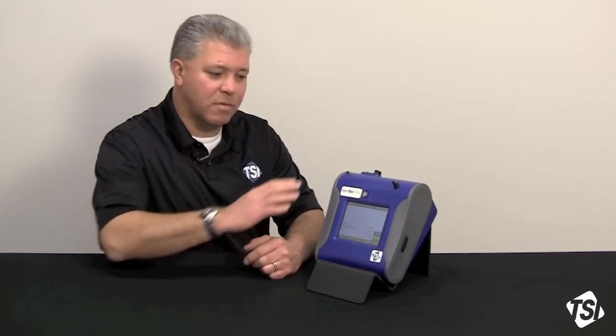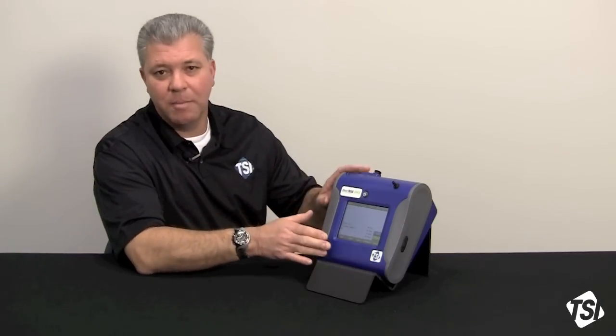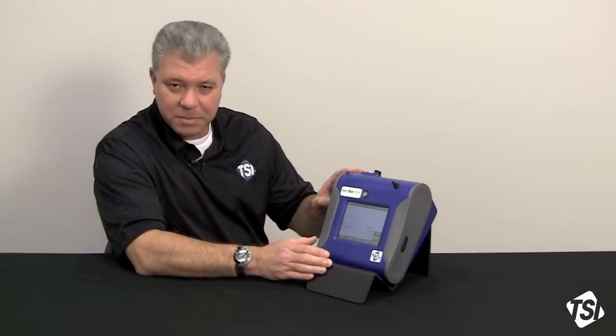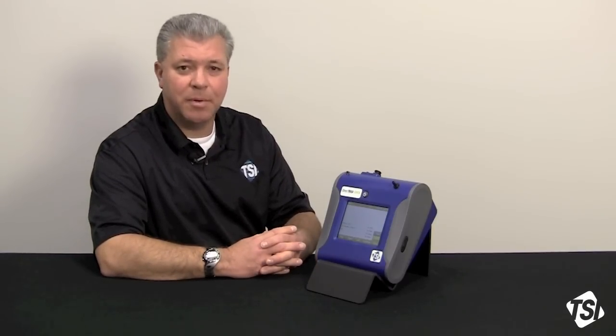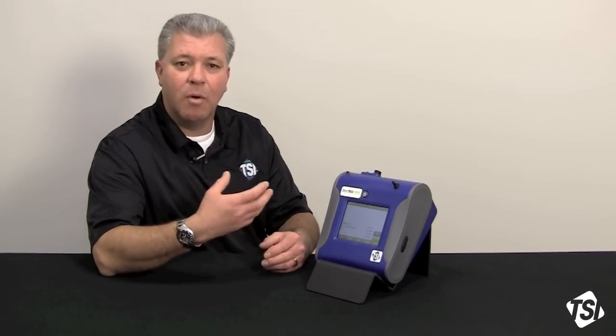Today we're going to be going over the DustTrak DRX, which is similar to the DustTrak 2 in menu format. What we're specifically going to do today is go through how to program a DustTrak 2 or DRX to sample either in survey mode, which is a non-logging mode, or manual logging mode, which is a quick setup mode for logging, and a program log mode, which is a much more detailed sample program that can be run for extended periods of time or to be able to conduct multiple samples.